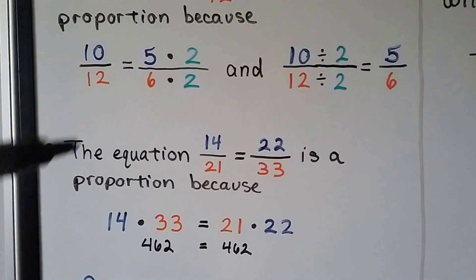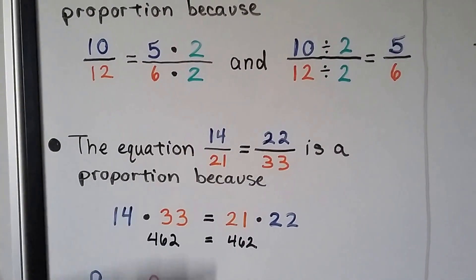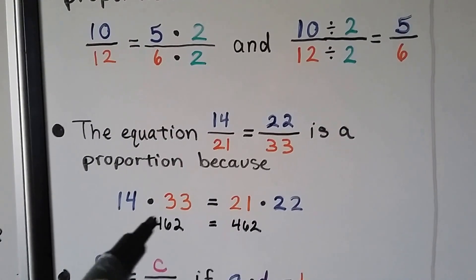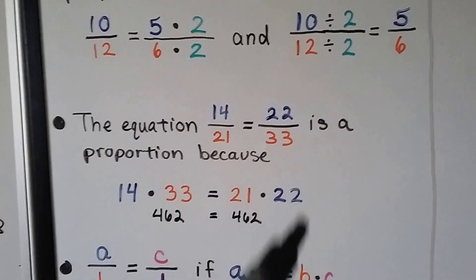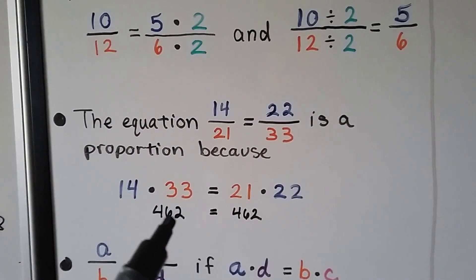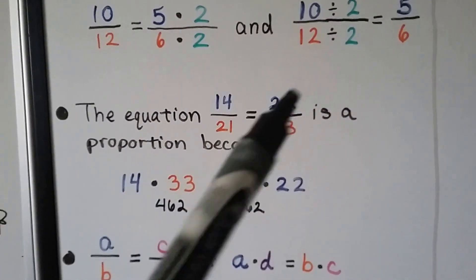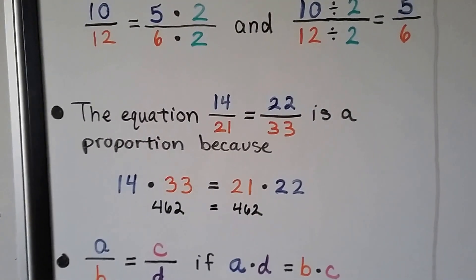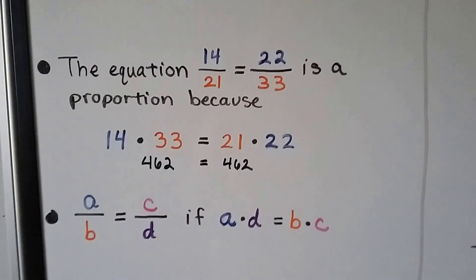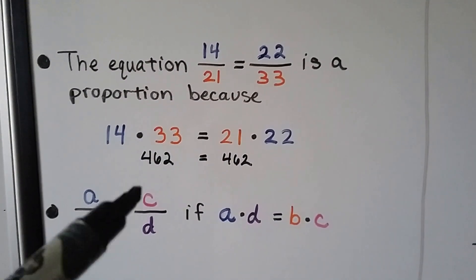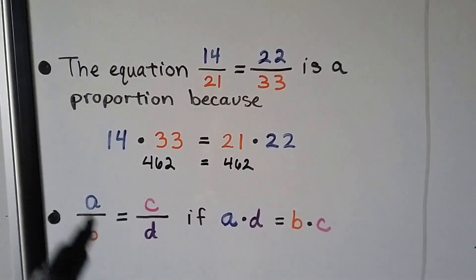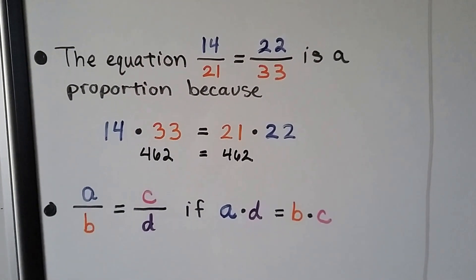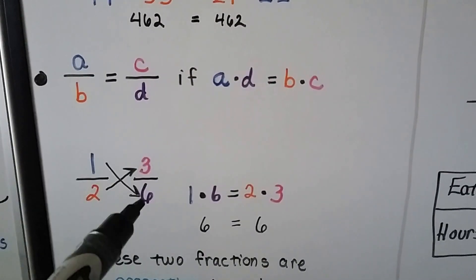This equation 14 twenty-firsts is equal to 22 thirty-thirds is a proportion because we can multiply 14 times 33 going across this way and get 462, and we can multiply 21 times 22 going across this way and get 462 and they're equivalent. That's cross products.